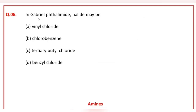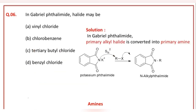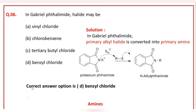In Gabriel synthesis, the halide may be: the correct answer option of this question is D, that is benzene chloride.